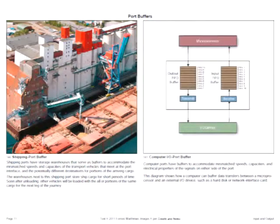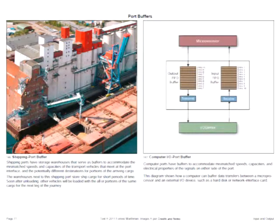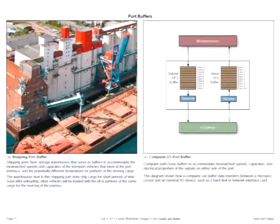Another example: a ship being unloaded, with cargo going into warehouses where it will be redistributed to other vehicles — again, storage and delay. On the right is a simple diagram of the relationship between a microprocessor and an I/O device. There are input and output FIFO buffers — first-in, first-out — that compensate for the speed differences on either side of the link.